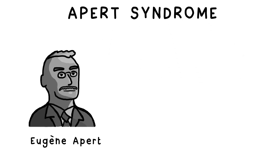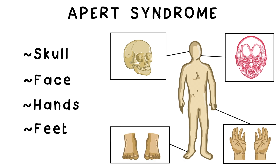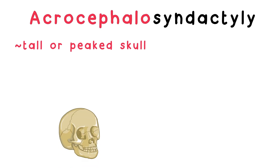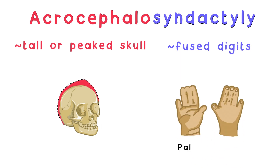Apert Syndrome is a genetic disorder named for French physician Eugène Apert, who first described it in detail. It's characterized by malformations of the skull, face, hands, and feet. An alternative name for Apert Syndrome is acrocephalosyndactyly, where acrocephalo refers to a tall or peaked skull and syndactyly means fused fingers and toes — two particularly prominent features of Apert Syndrome.